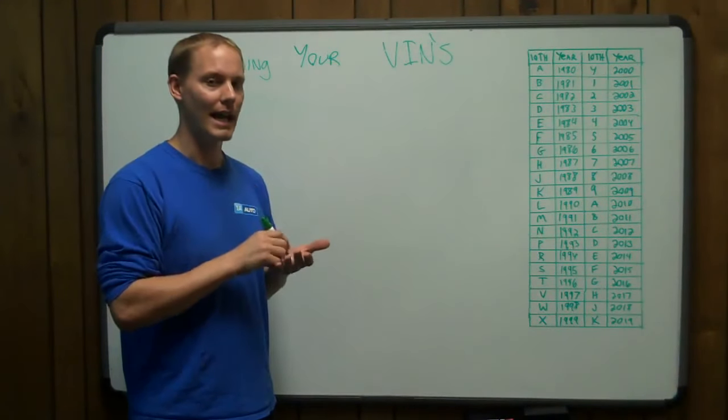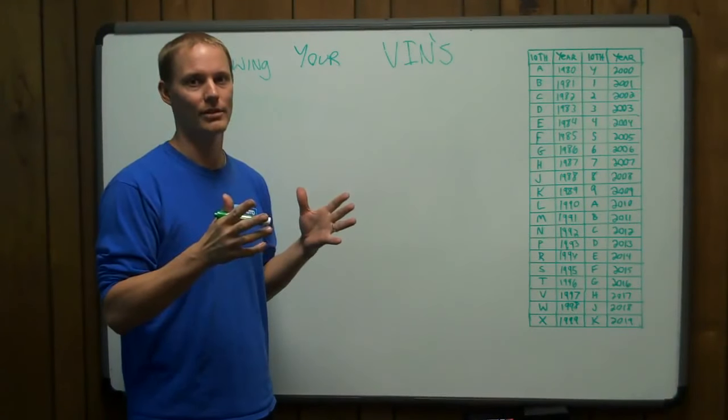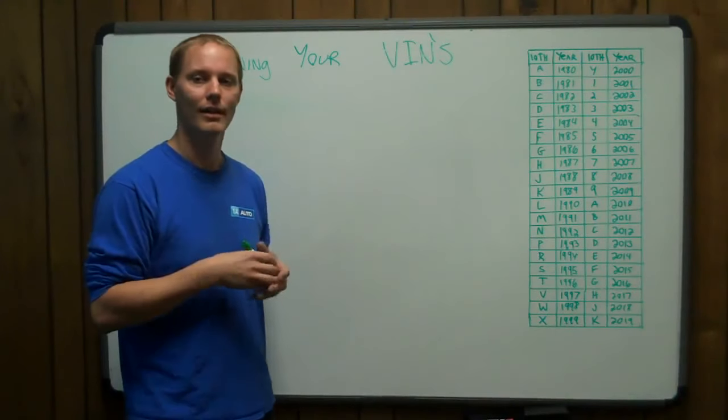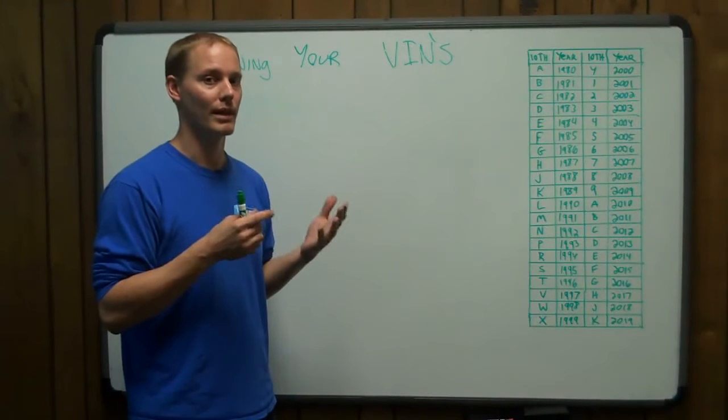The letters I, O, and Q were never used in VIN numbers from 1981 until today and going forward. That's because they get easily confused with the numbers 1 and 0.